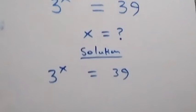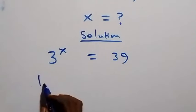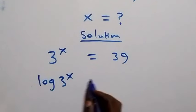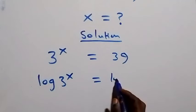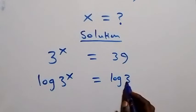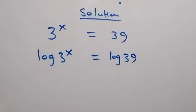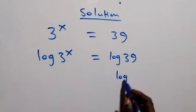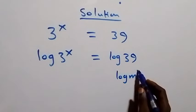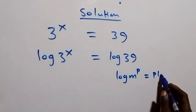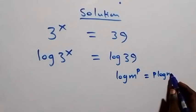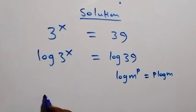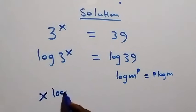Here let's take the log on both sides. Then we have log of three raised to power x equals to log thirty-nine. When we apply the power law of log — log m raised to power p equals p log m — here x is the power, and this gives us x log three.